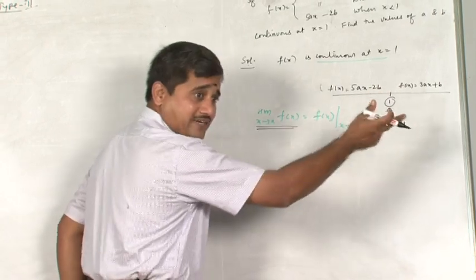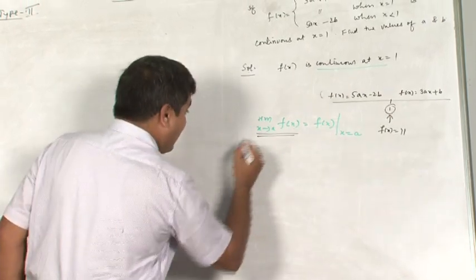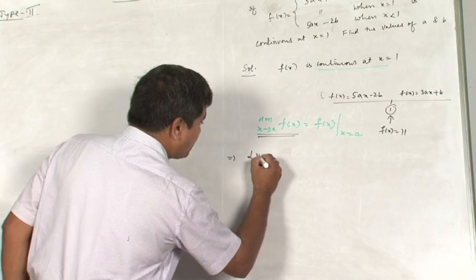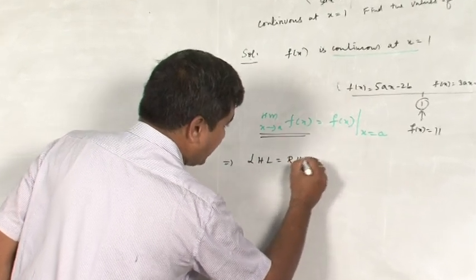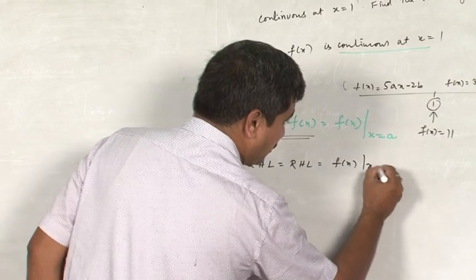The function structure is same on both sides. Since it is different now, I will be splitting this: LHL is equal to RHL is equal to f of x at x is equal to a.